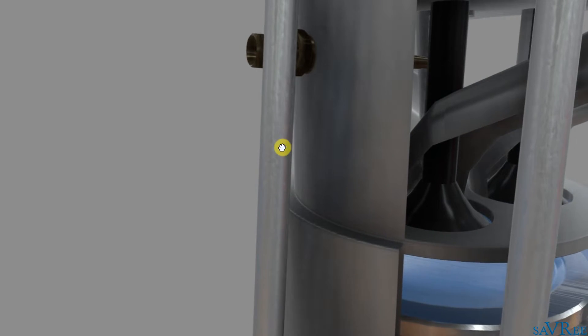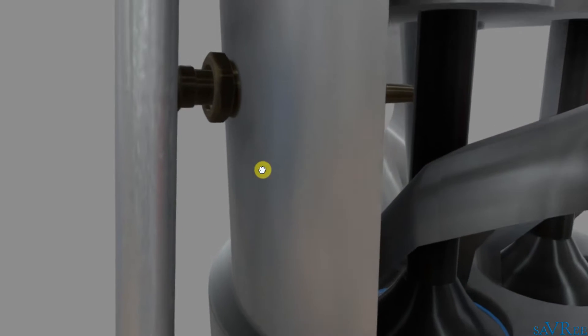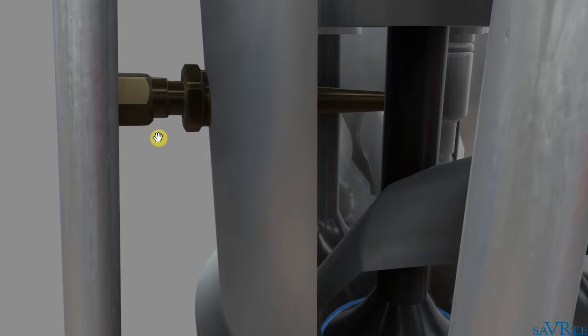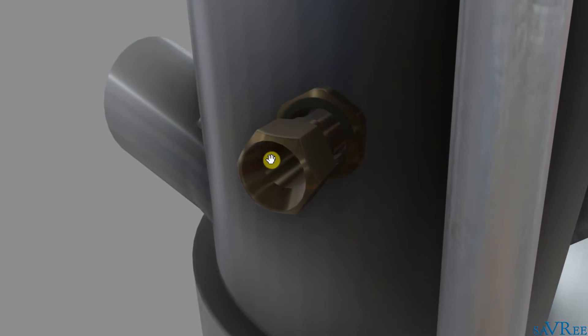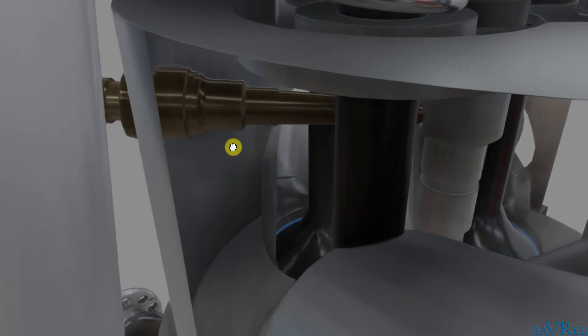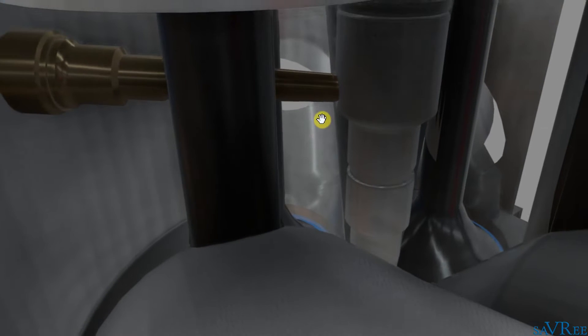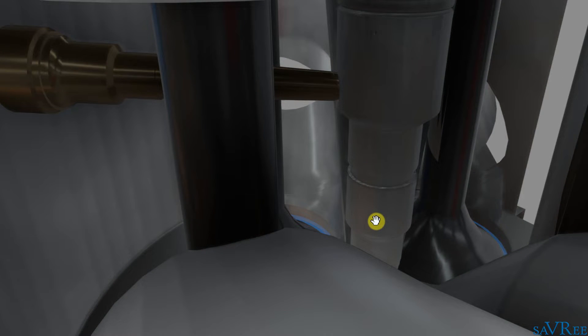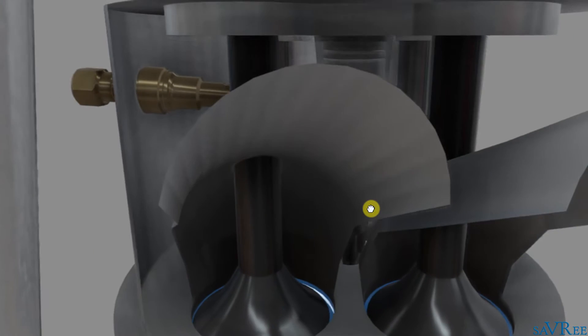If we come around the side, we can actually see the fuel connection. So the fuel comes in through this pipe and connects to the fuel injector, as we see here. The fuel is then injected into the combustion space. So that is our fuel injector and those are our valves.